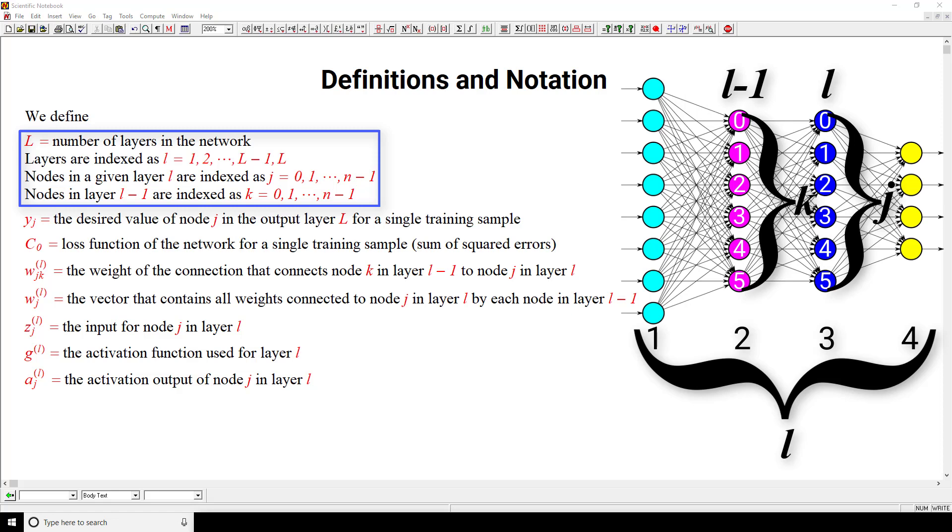So moving on to the next definition, we then define Y sub j as the desired value of node j in the output layer big L for a single training sample. So, given that we have labeled training data, we know ahead of time the output that we desire for any given input. And so Y sub j here is the desired value of some given input for a particular node j in the output layer.